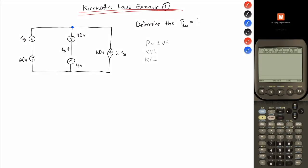Hello, Wagwan. This is your boy Ink, and today we're going to use Kirchhoff's law to determine the power developed in the circuit. Today we're going to use three equations: P equals V times I, which is one of the power equations, and we're going to use KVL and KCL.